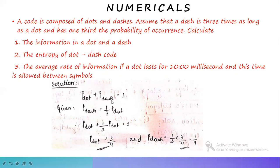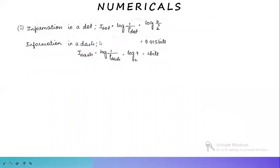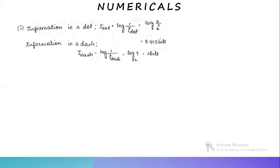We get these values after solving the equations. Next, we calculate the information in dot and dash. The information in dot: I_dot equal to log(1/p_dot) base 2. Substituting p_dot as 3/4, we get log(4/3) base 2, which equals 0.415 bits. Similarly, I_dash equal to log(1/p_dash) base 2. Substituting p_dash as 1/4, we get log4 base 2, which equals 2 bits.